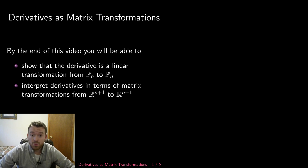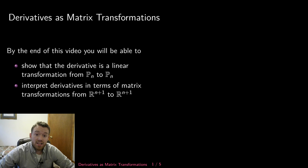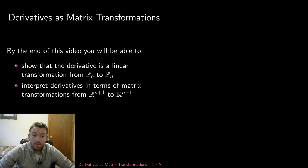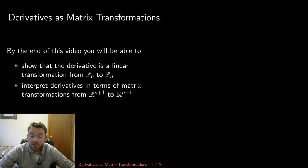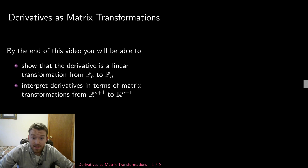The question I received from a few students was about derivatives as matrix transformations. The take-home exam I gave last week had a question about a derivative — a transformation from Pn to Pn, that's polynomial space Pn — trying to realize that as a linear transformation, then associating it to a matrix transformation from R^(n+1) to R^(n+1). I want to start by looking at polynomial space and seeing that the derivative is a linear transformation.